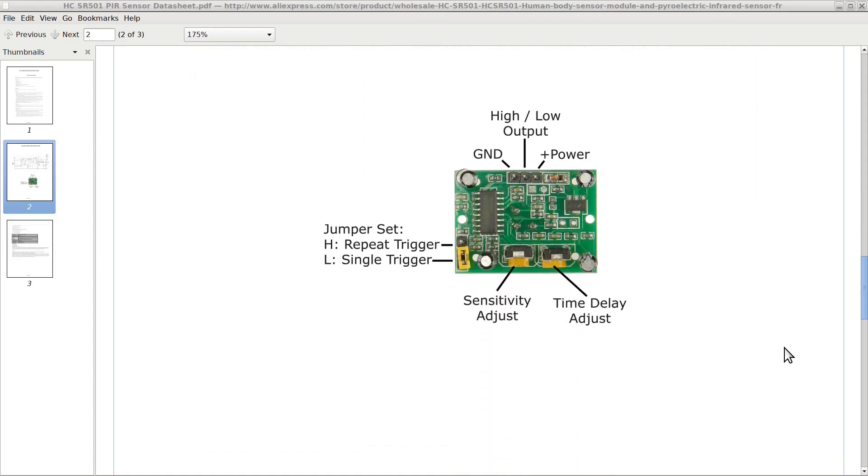This is a picture of the device PCB. Note the presence of a jumper that can be set in two different modalities, single and repeat trigger. We will use the single trigger modality. Note also the two trimpots on the bottom side. The one on the left allows us to set the appropriate sensitivity for our needs, and the second adjusts the time delay generated by the internal circuitry.